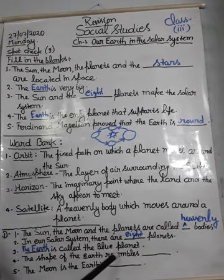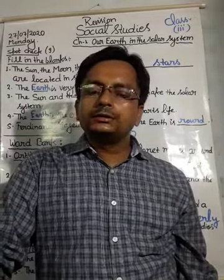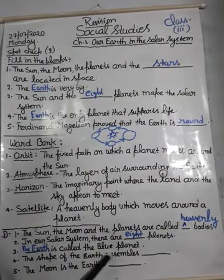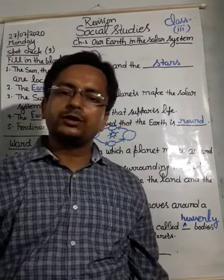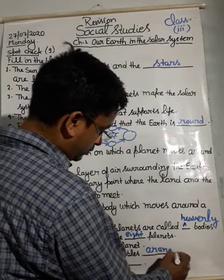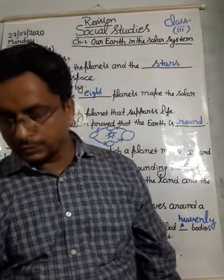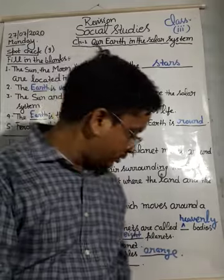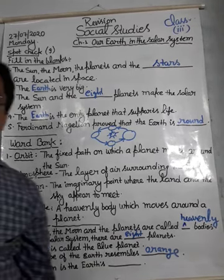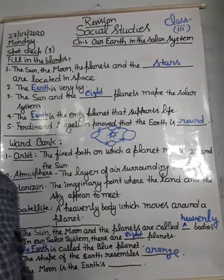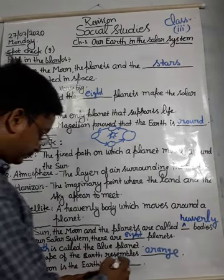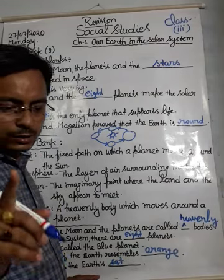The shape of the earth resembles an orange. And the last one is: the moon is the earth's dash. The answer will be satellite — the moon is the earth's satellite.